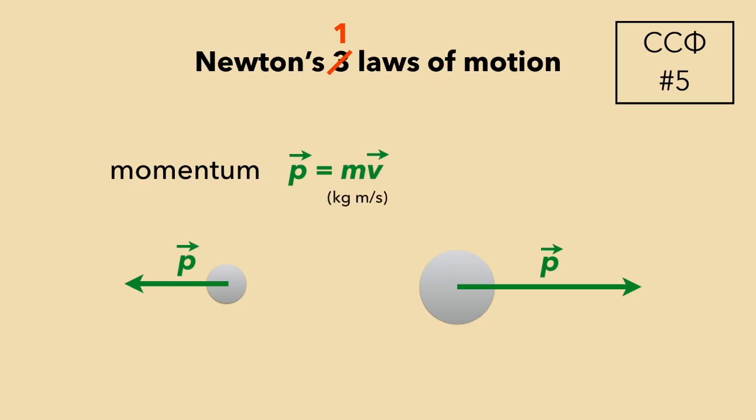And here's the one law of motion. Momentum is conserved. That means it cannot be created nor destroyed. A single object's momentum can change but not the total amount of momentum of all objects together.